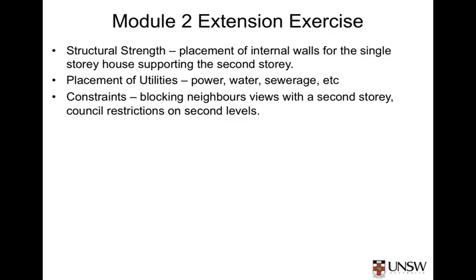Of course, there are many other considerations. If we're going to place a second floor, the structural strength of the lower floor needs to be considered in the initial design. The lower floors must be of sufficient structural strength to cope with the initial building as well as to allow a second floor to be added on. Similarly, the placement of utilities should be considered in the initial preliminary design. If there is an additional bathroom and kitchen placed on the second storey, the location of the downstairs wet area should be considered. Having upstairs plumbing located directly above the downstairs plumbing will save significant costs.